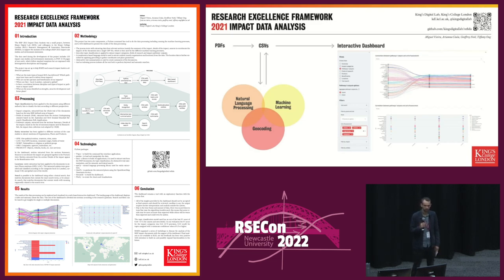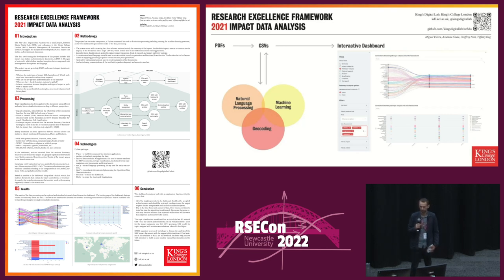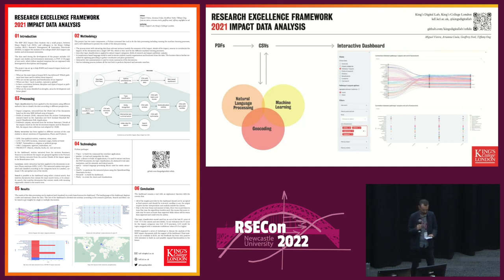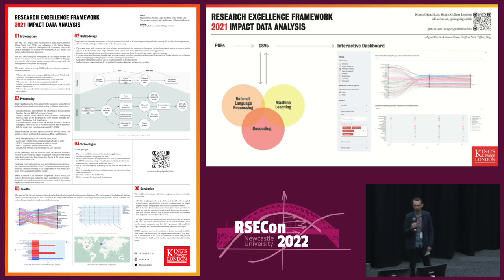The data is processed mainly for topic classification, semantic search, and entity extraction, using a mixture of natural language processing, machine learning, and geocoding. All of that is available in the dashboard so you can filter and search documents as well as access different types of visualizations — from simple bar charts displaying counts or aggregations, to more complex visualizations showing connections between different data points. The dashboard is being used at King's College for impact analysis and the results so far have been promising.